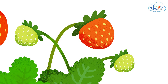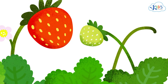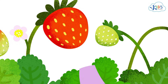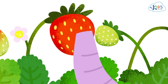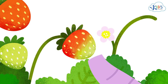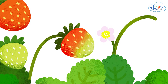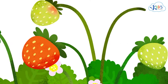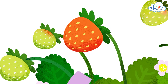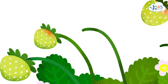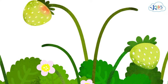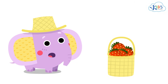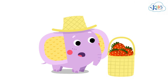Let me see. I'll pick this one. And no, this one is green. Wow, here's a ripe strawberry. And this... No, it should stay on the bed. I'll pick this one, and this one, and this one too. Now there are only green strawberries left on the bed, and all the red ones are in my basket.